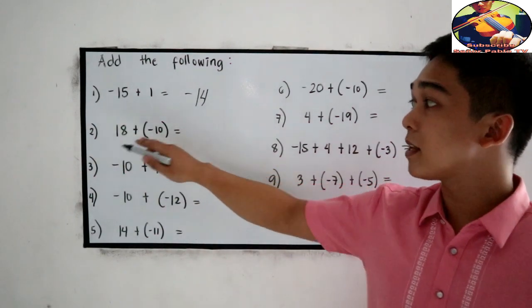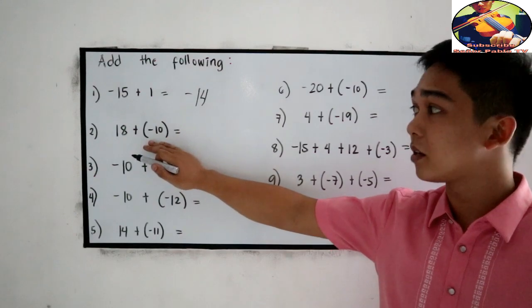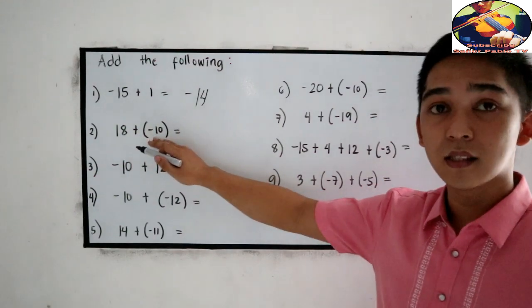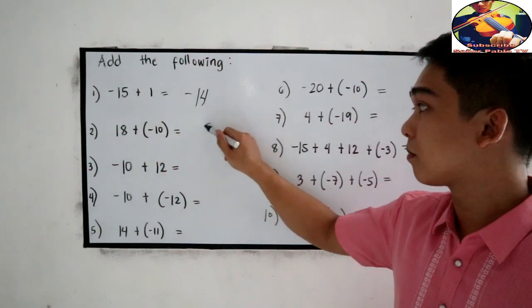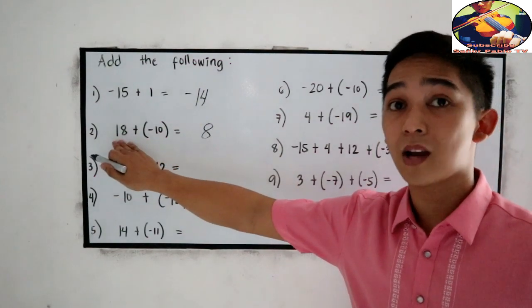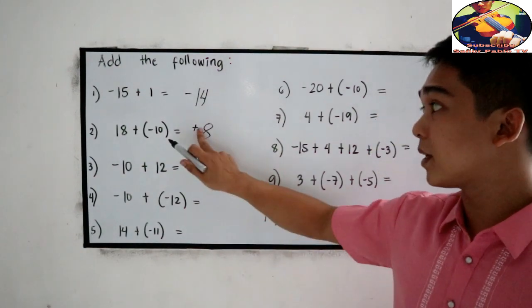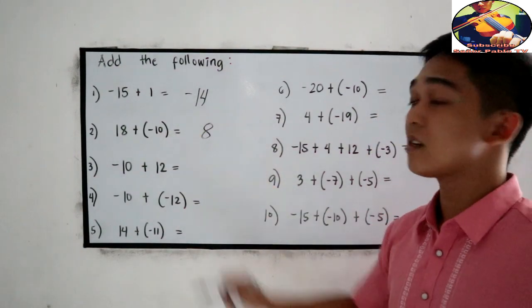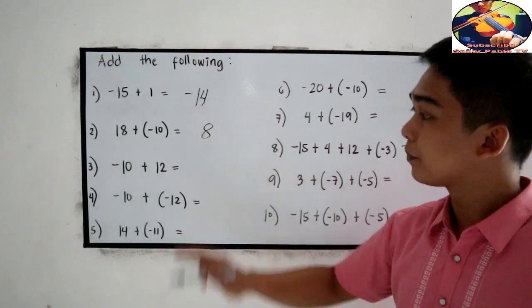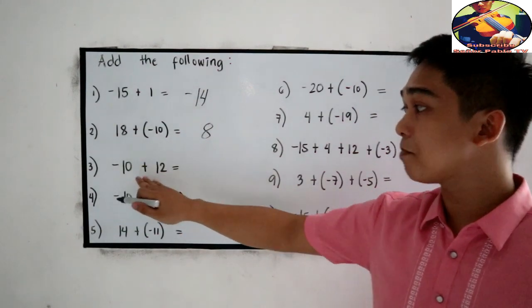Negative 18 plus negative 10. So unlike signs, subtract the numbers. 18 minus 10, that is 8. Get the absolute value, so 18 is bigger. So copy the sign of 18, positive 8. Or simply the number 8. That is understood as positive.